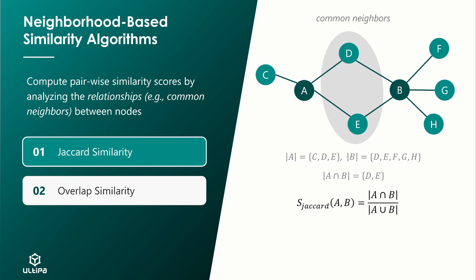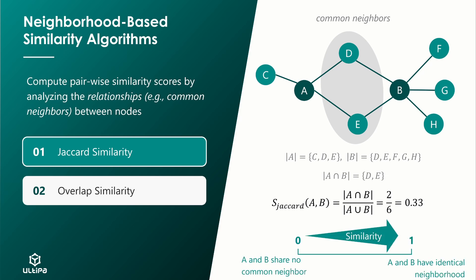Jaccard similarity between set A and B is defined as the size of their intersection over the size of their union. Their intersection size is 2 and union size is 6, so their Jaccard similarity score is 0.33. Jaccard similarity ranges from 0 to 1. 1 means that A and B have identical neighborhood. 0 means that they have no common neighbor.